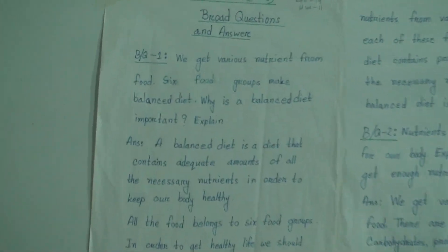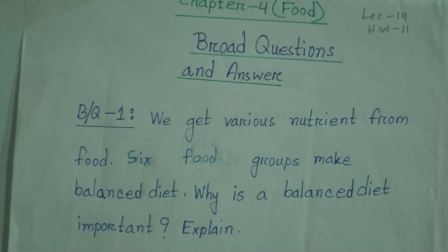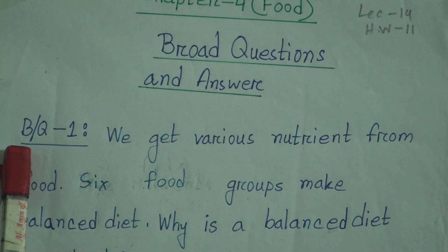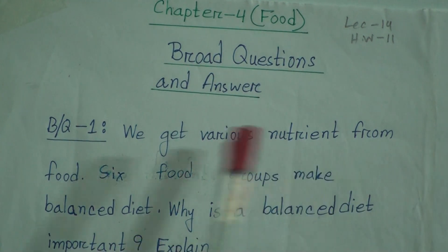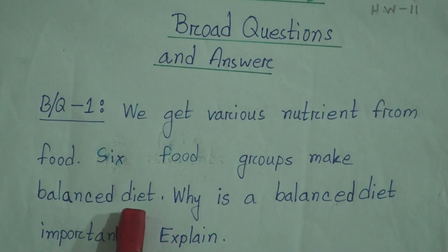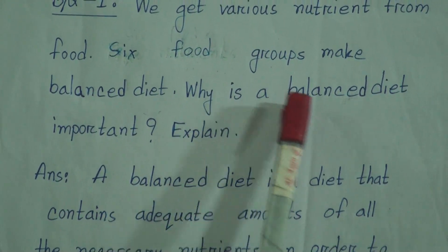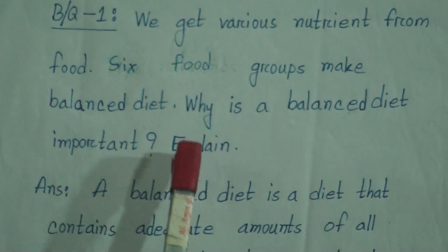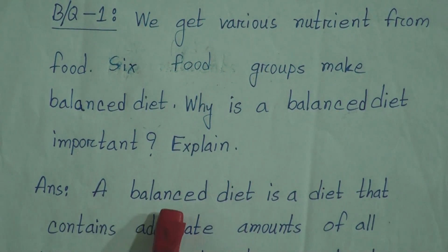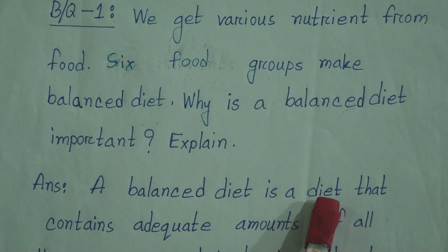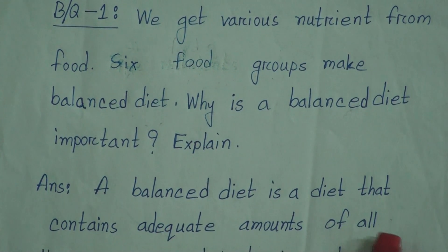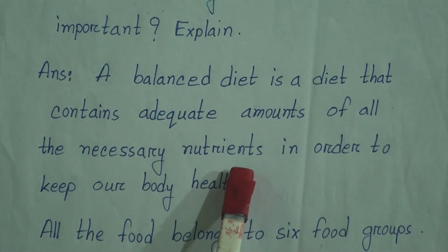I have written here broad question 1 and 2. Broad question 1: We get various nutrients from food. Six food groups make a balanced diet. Why is a balanced diet important? Explain. Answer: A balanced diet is a diet that contains adequate amount of all the necessary nutrients in order to keep our body healthy.